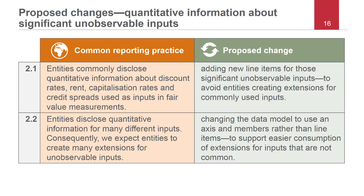We propose two changes for such disclosures. First, we've observed that entities commonly disclose information for the following unobservable inputs: discount rates, rent, capitalisation rates, and credit spreads — so we've added elements for those four inputs to the IFRS taxonomy. In addition, entities also disclose information about many entity-specific inputs, for which they have to create extensions. By changing how this disclosure is tagged, we aim to make those extensions easier to consume for users, because all extensions for inputs will be members linked to an axis.